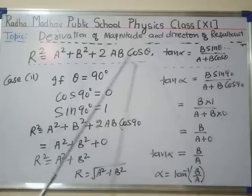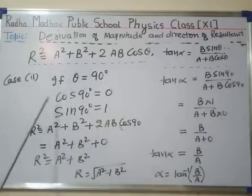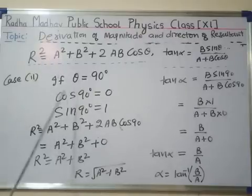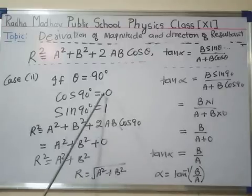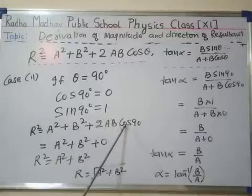Now putting the value of cos 90° here, R² = A² + B² + 2AB cos 90°. As cos 90° has value 0, it becomes A² + B² + 2AB × 0.